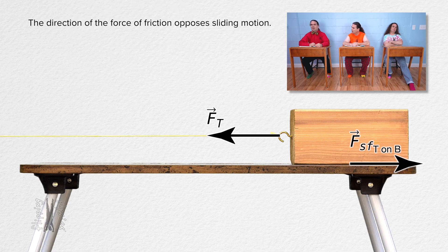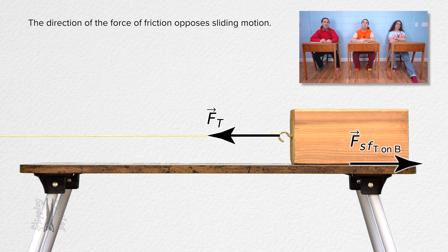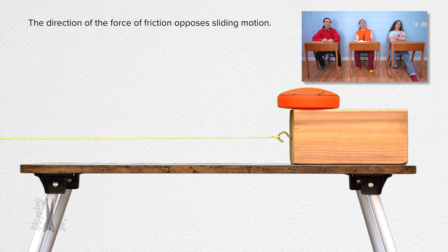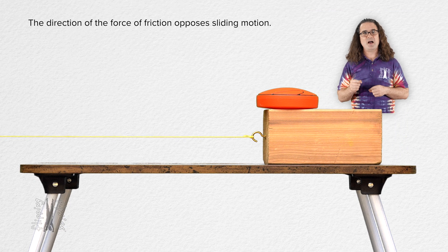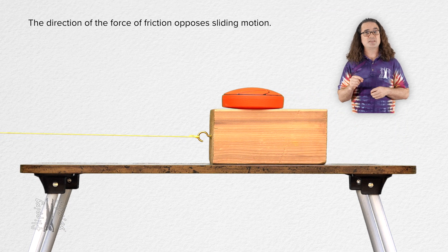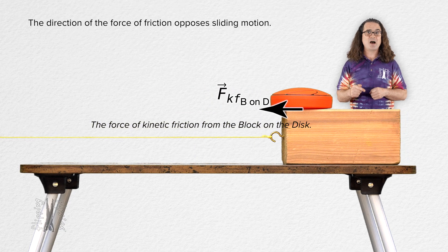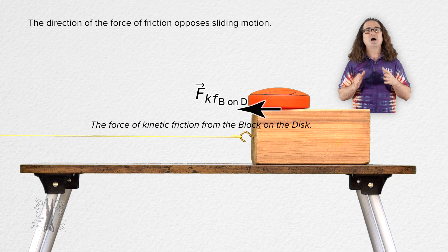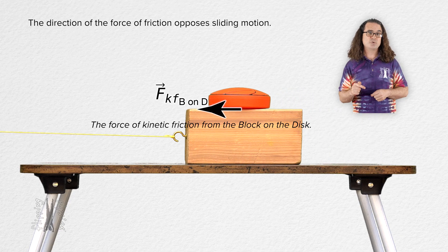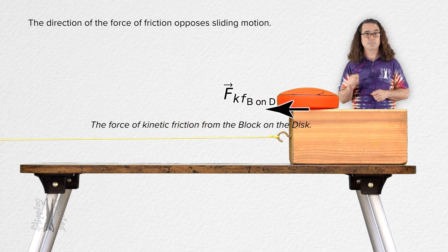I feel like we have basically already discussed these demonstrations. But now, let's make it a little bit more complicated by placing a disk on top of the block and discuss the direction of the force of friction from the block on the disk. If a disk is on a block while the block is moving to the left and the disk is sliding to the right relative to the block, the force of kinetic friction from the block on the disk is to the left. Again, the force of kinetic friction opposes the sliding motion of the disk relative to the block.